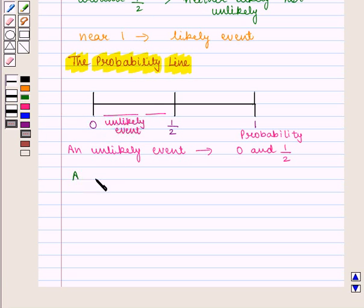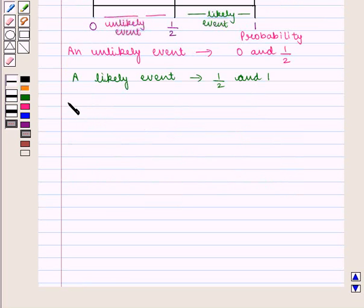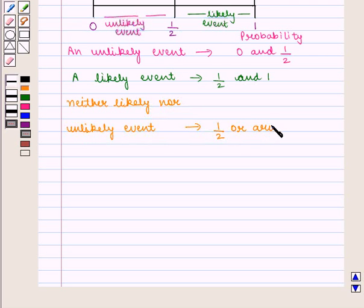A likely event would have a probability between 1 by 2 and 1, and it would be near to 1. Probability for neither likely nor unlikely event will be 1 by 2 or around 1 by 2.